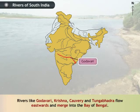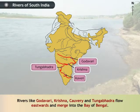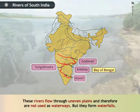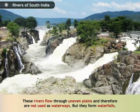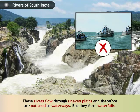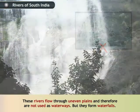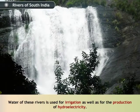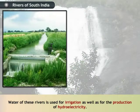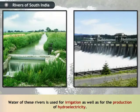Narmada and Tapti flow towards west and flow into the Arabian Sea. Rivers like Godavari, Krishna, Kaveri and Tungabhadra flow eastwards and merge into the Bay of Bengal. These rivers flow through uneven plains and therefore are not used as waterways, but they form waterfalls. Water of these rivers is used for irrigation as well as for the production of hydroelectricity.